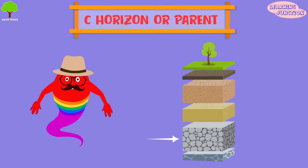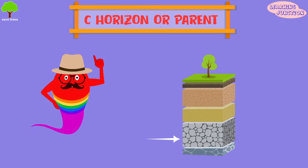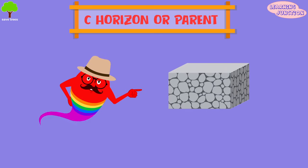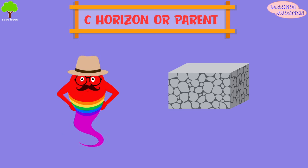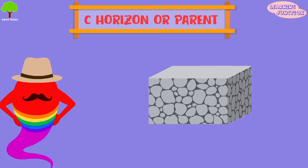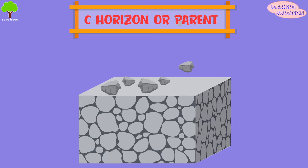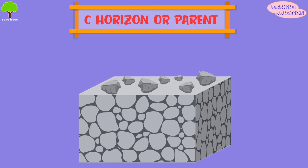C — parent material. This layer is known as the parent material because the upper layers developed from this layer. It is made up mostly of large rocks and consists primarily of solid big rocks.